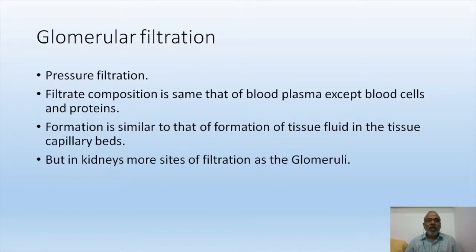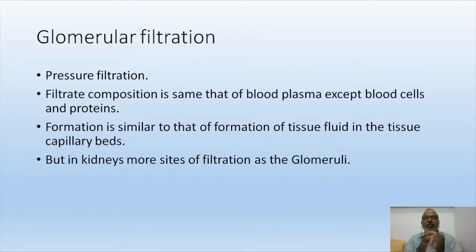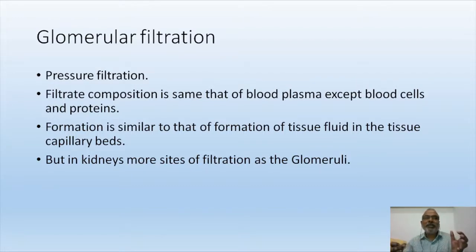Glomerular filtration occurs at the level of the glomerulus. The glomerulus is situated in the Bowman's capsule. Glomerulus and Bowman's capsule together are known as Malpighian corpuscle, otherwise called renal corpuscle. The arrangement of glomerulus and Bowman's capsule facilitates pressure filtration — a filtration which utilizes pressure for separating materials.